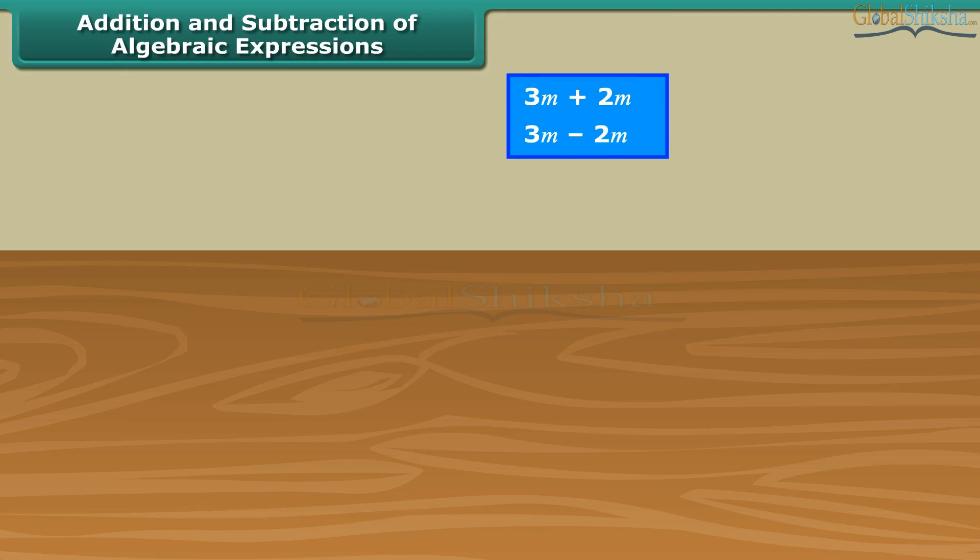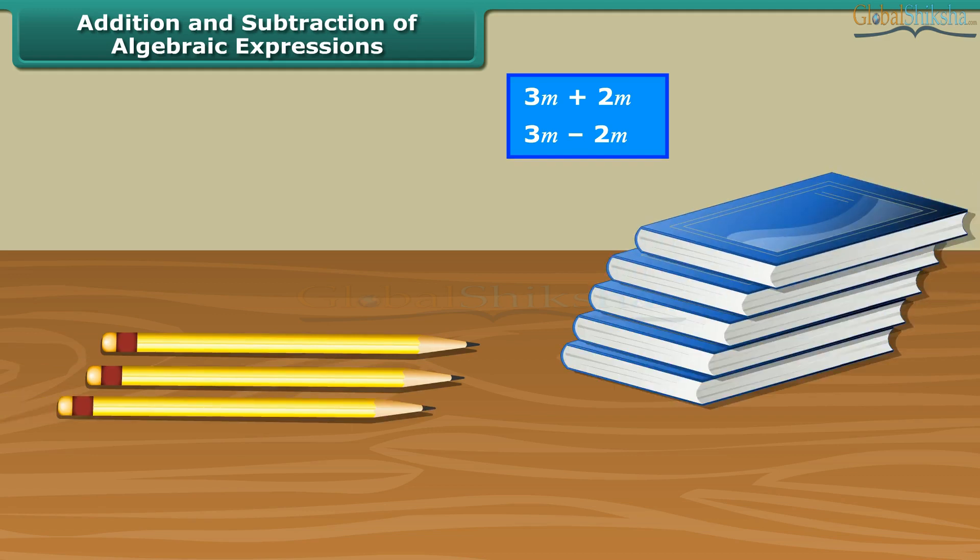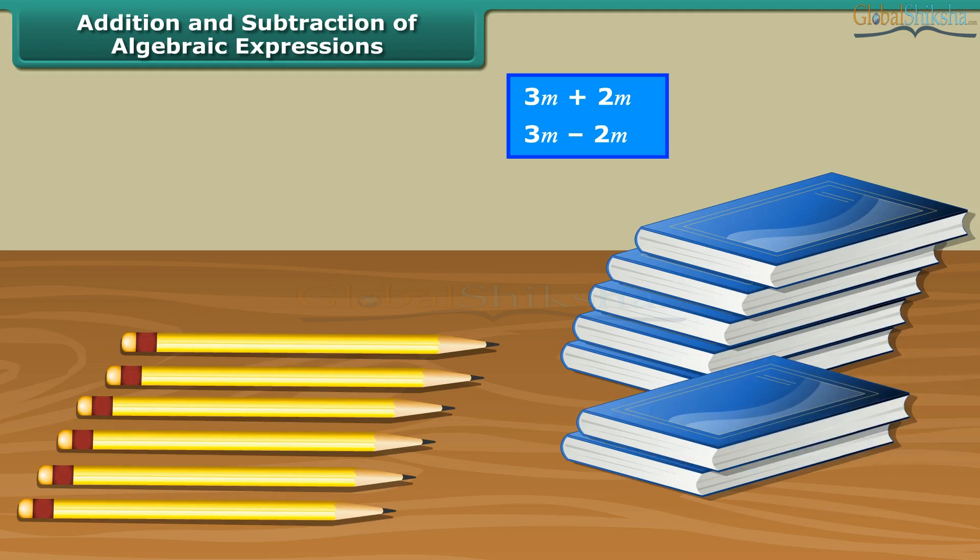We can only add or subtract like terms. But why is it so? Think of it like this. On a table, we have three pencils and two books. We cannot add the three pencils to the two books because they are not the same kind of objects. Now, if we get another three pencils and five books, all together, we now have six pencils and seven books. Now again, we can't combine these objects since they are different. However, if we remove one pencil from six pencils, then we are left with five pencils but still we have the seven books. So, you can see it's quite similar with algebra. We can only add or subtract only similar objects.